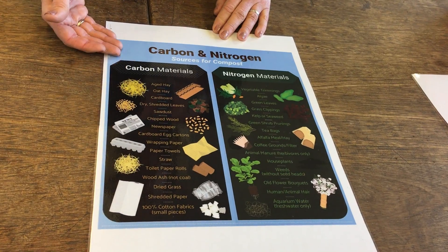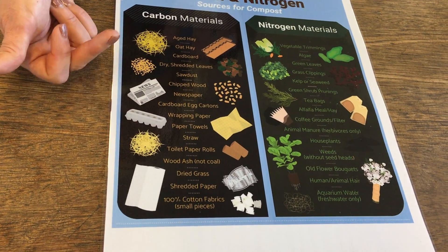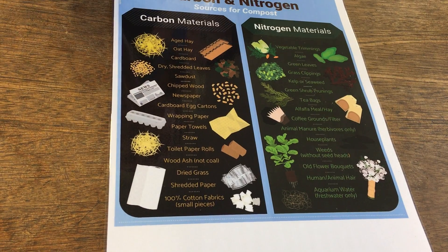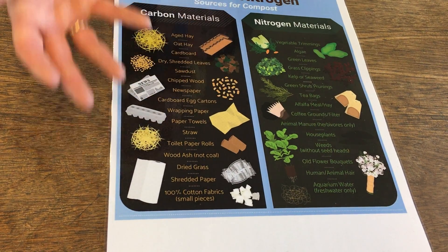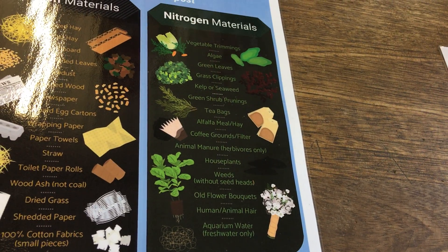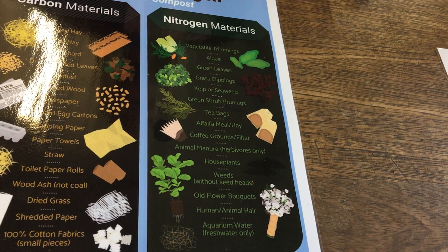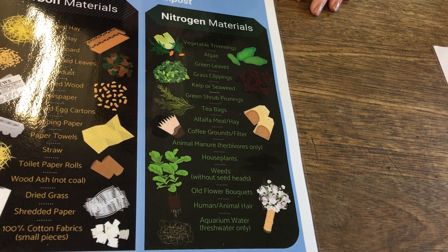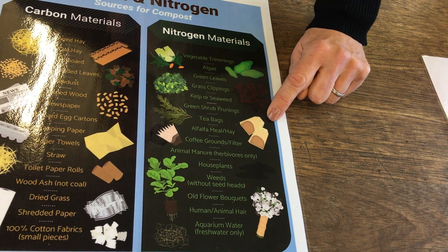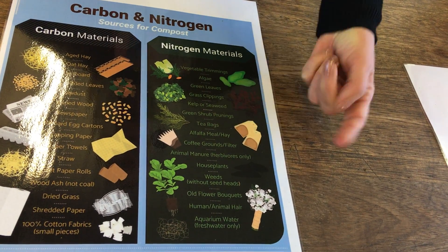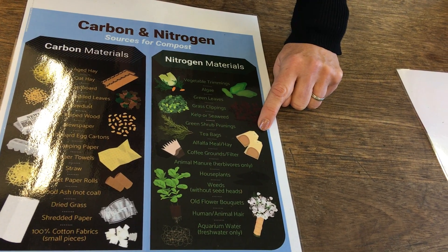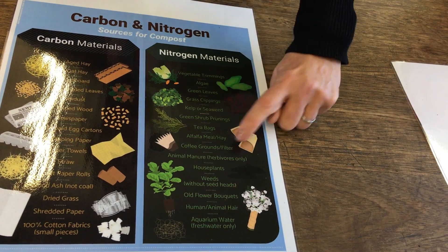Browns that can go in the compost bin include newspaper, cardboard, straw, dry sawdust, bark chippings, and woody prunings — a lot of these look brown in colour. For nitrogen, we've got herbaceous material, grass clippings, anything soft and green, weeds without seed heads, tea bags (these must be organic, as many have a plastic outer bag), and coffee grounds with filter bags.